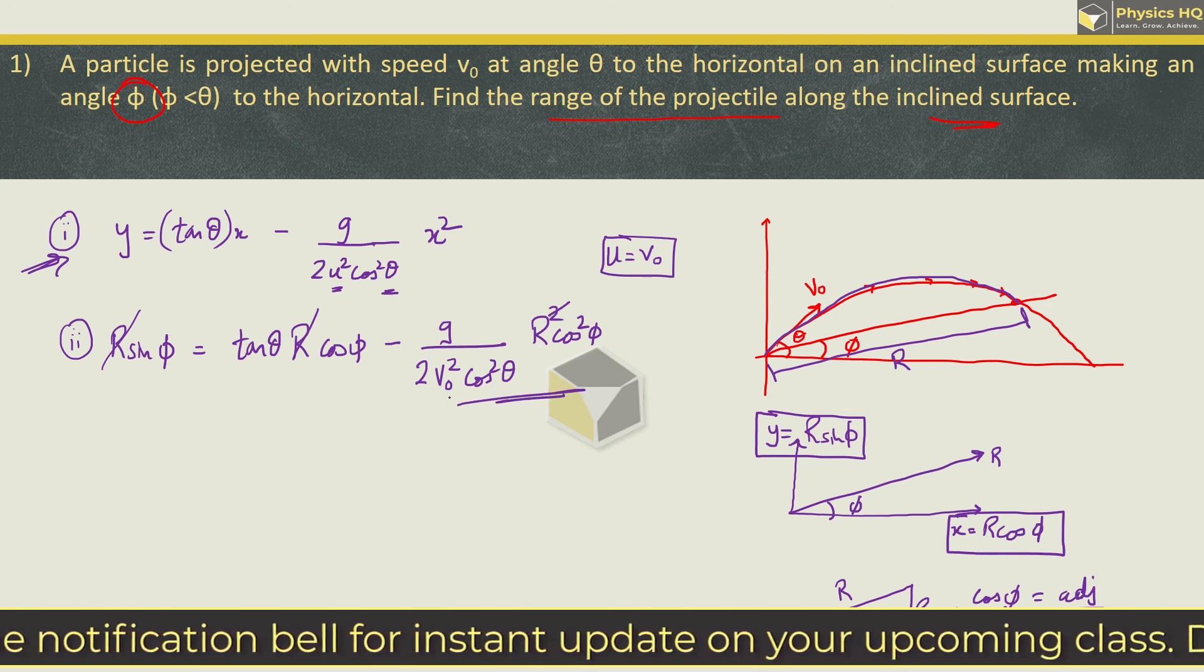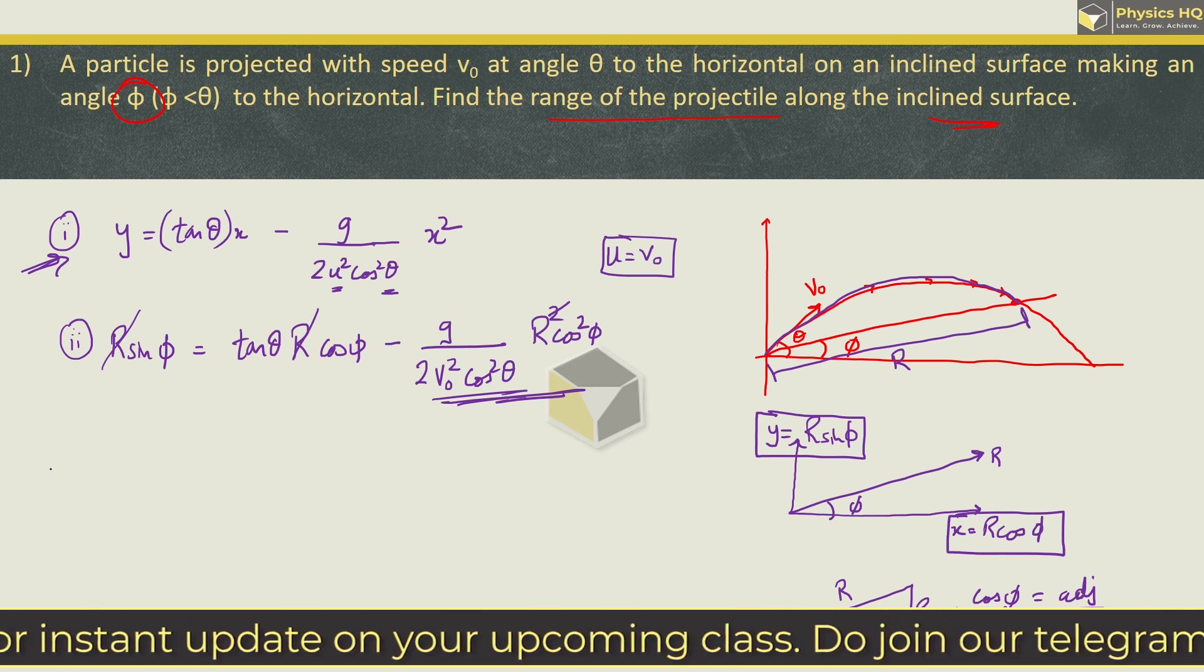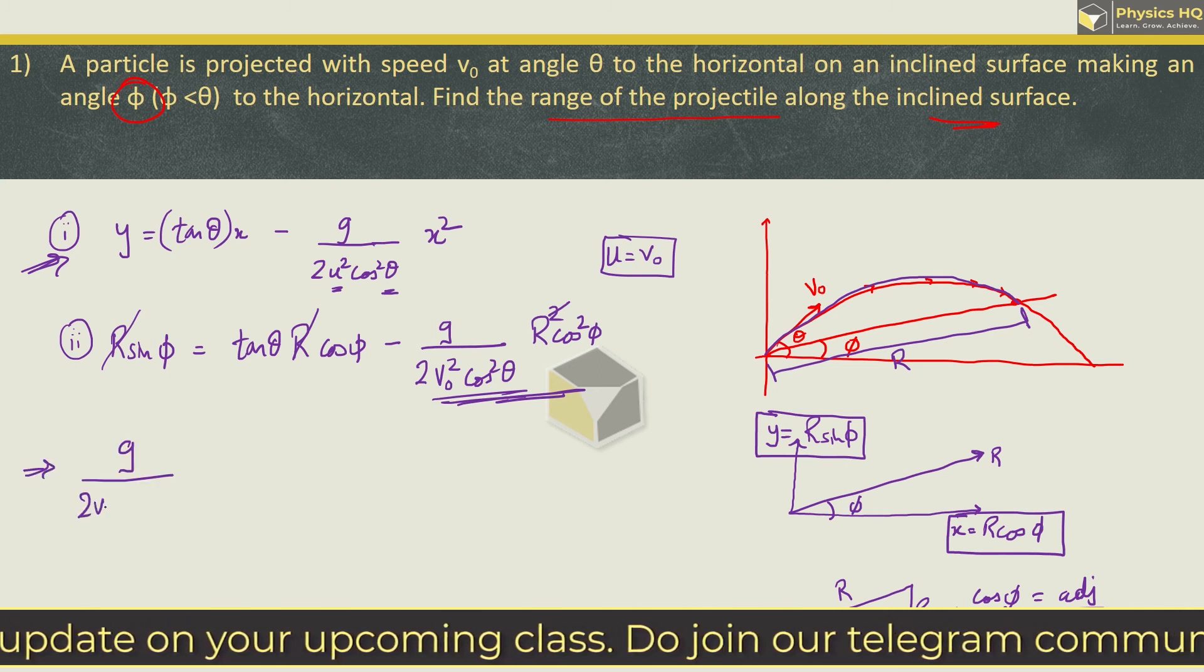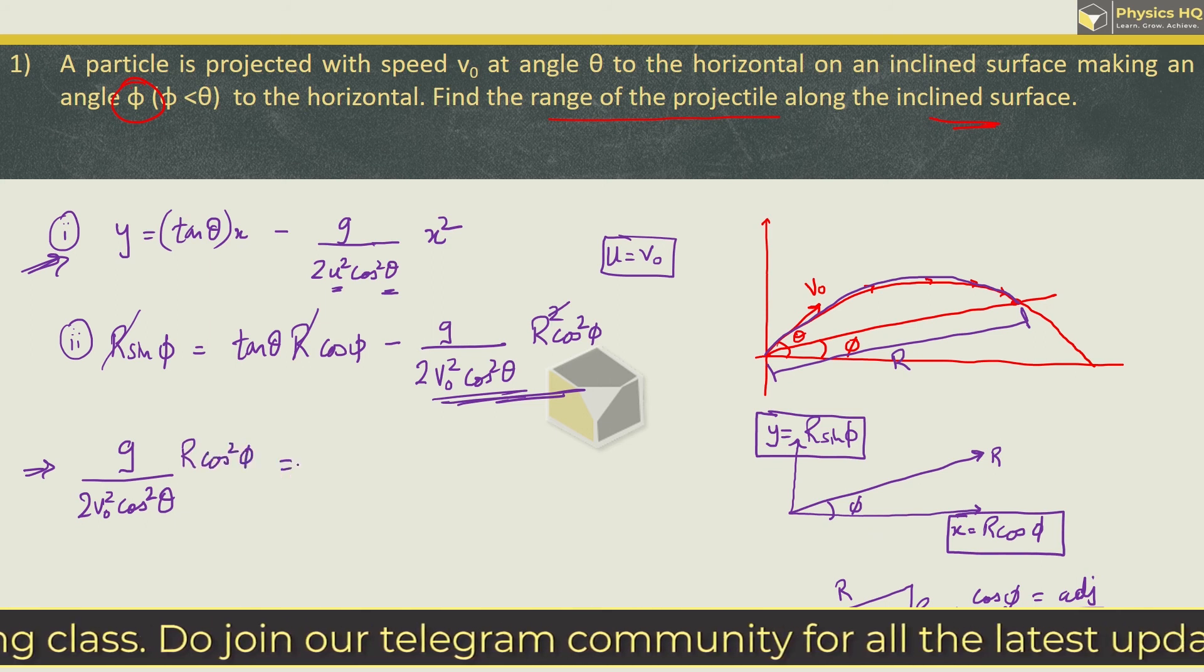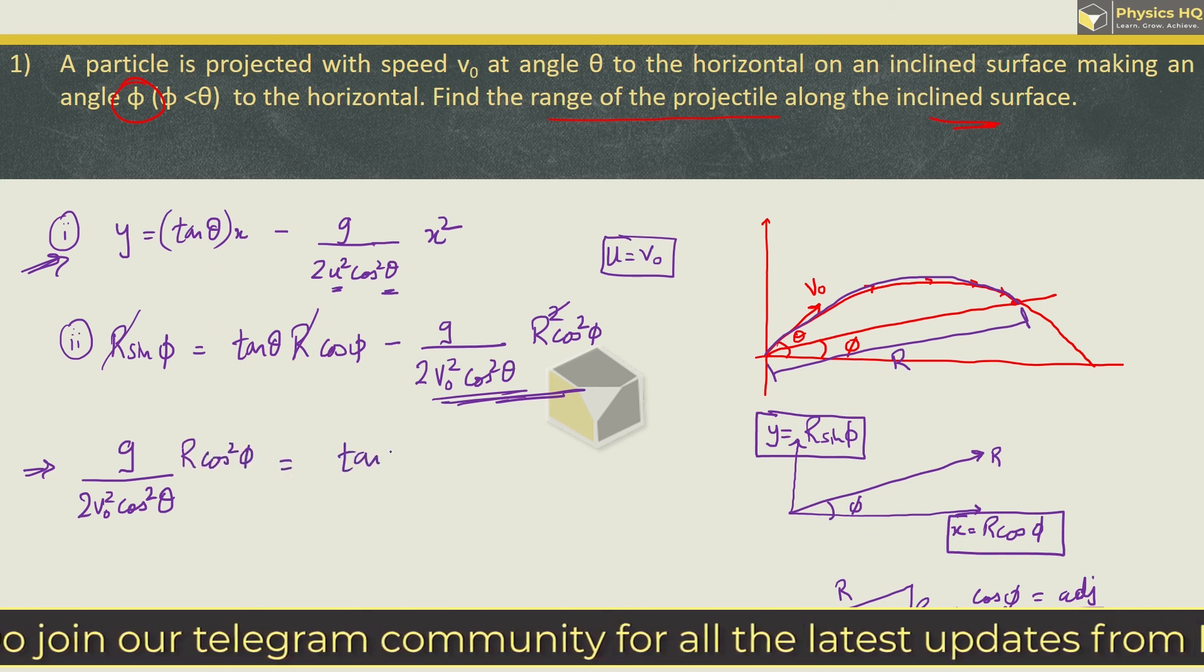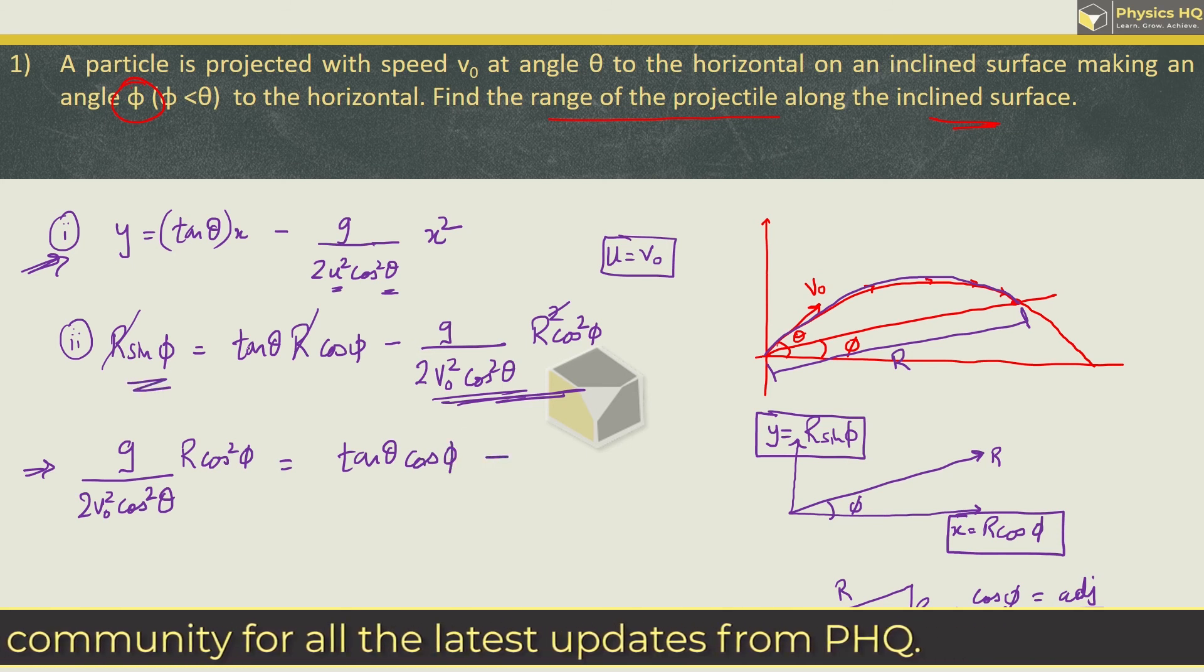And we will find the third term. What we will do is, if we take this side on one side, so we will have g by 2 v0 square cos square theta into r cos square phi. This is equal to, here we have tan theta cos phi minus this term is equal to sin phi.